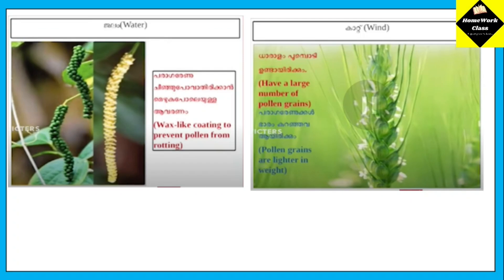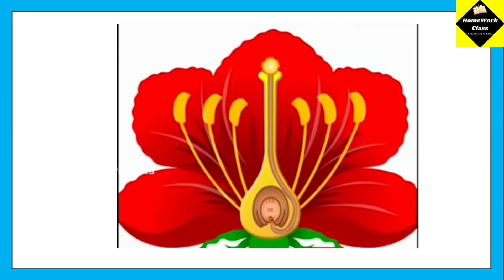8. Water. 9. Wax-like coating to prevent pollen from rotting. Wind pollination.